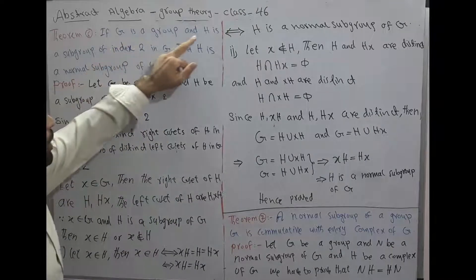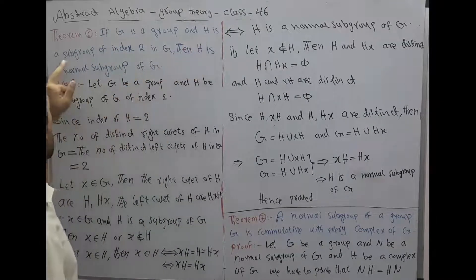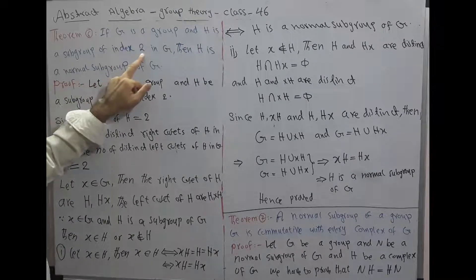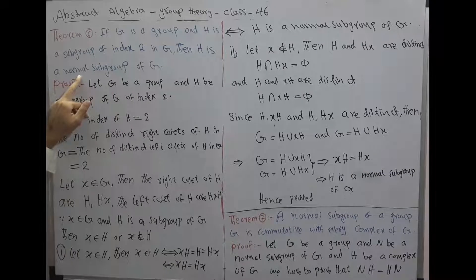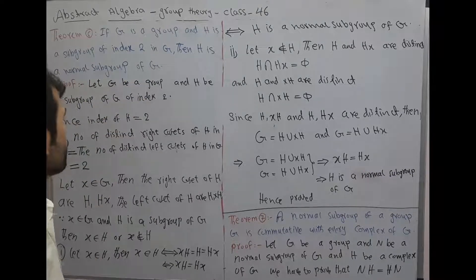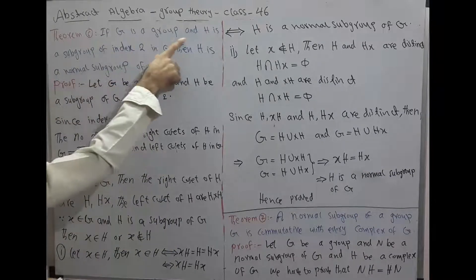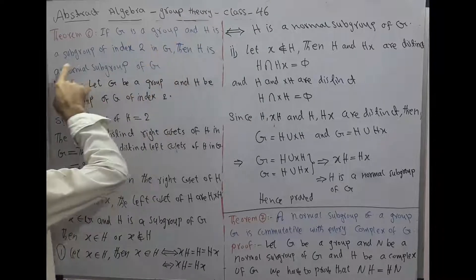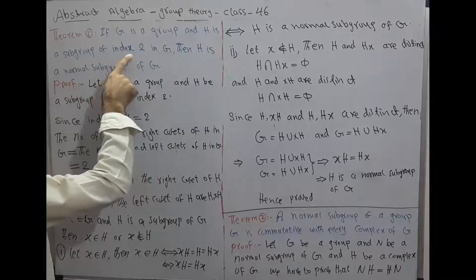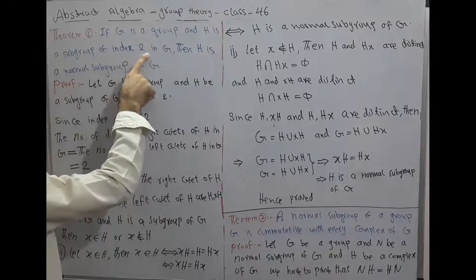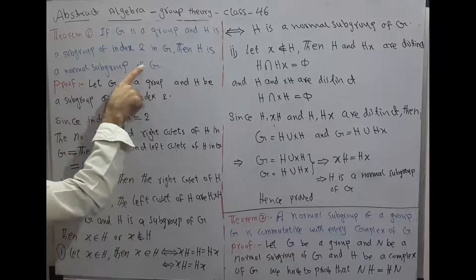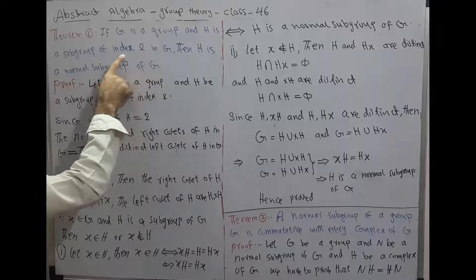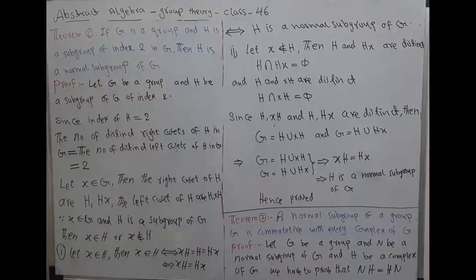Theorem 6: If G is a group and H is a subgroup of index 2 in G, then H is a normal subgroup of G. This means the number of left cosets or right cosets is 2.